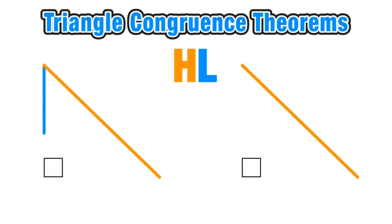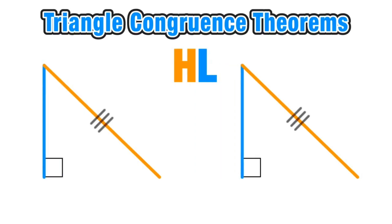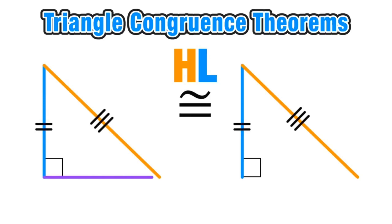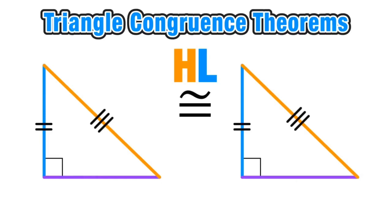If the hypotenuse and a corresponding leg are congruent in two right triangles, that is enough to say that the two triangles are congruent — meaning their corresponding sides and corresponding angles all have the same measure.